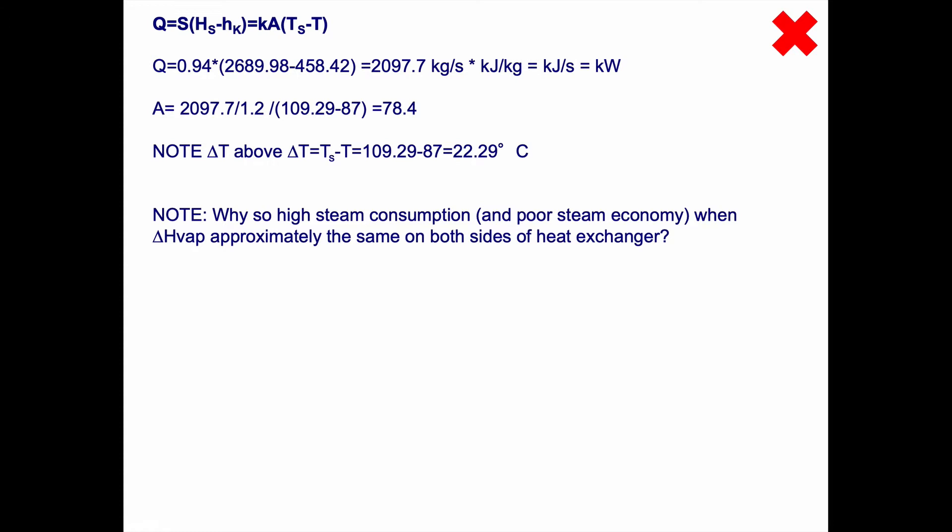Why do we have so high steam consumption and poor steam economy of 0.8, when the evaporation enthalpy is approximately the same on both sides of the heat exchanger? Shouldn't it be that the energy given away by the steam should be used for evaporation? And if the evaporation enthalpy is approximately the same on both sides, shouldn't the steam economy be 1? Well, it should if we had a preheated feed, but we don't. The feed only had 38 degrees Celsius, so it's not preheated enough. If we preheat it, we will get better steam economy.